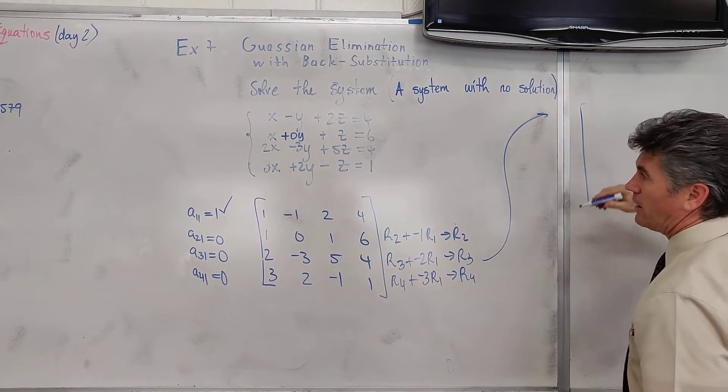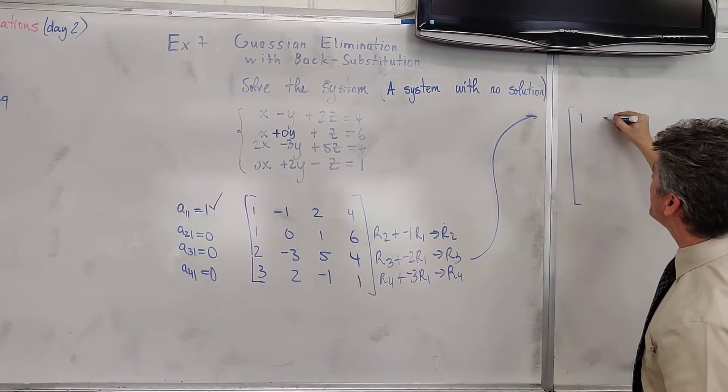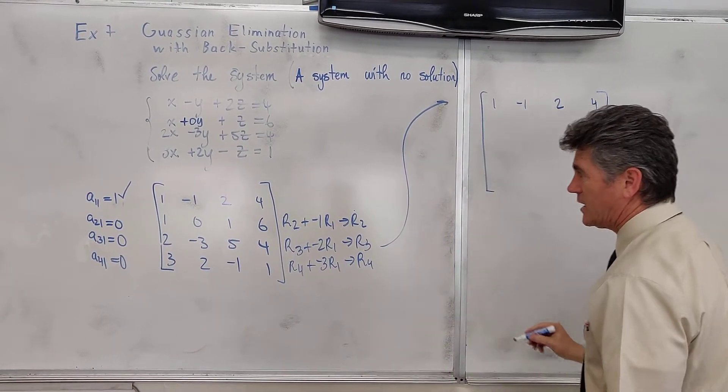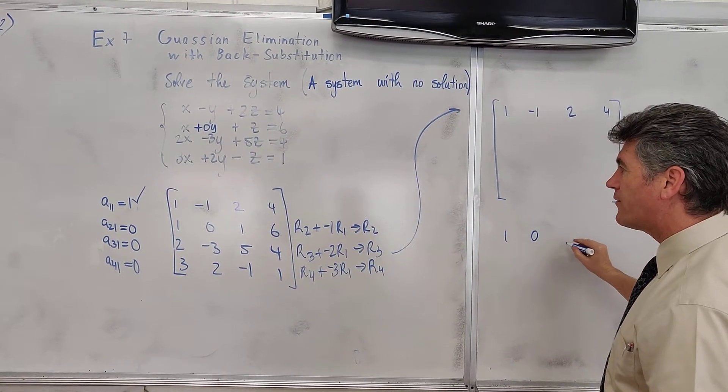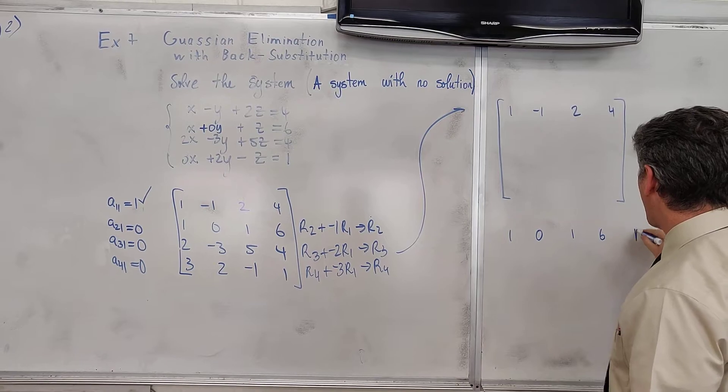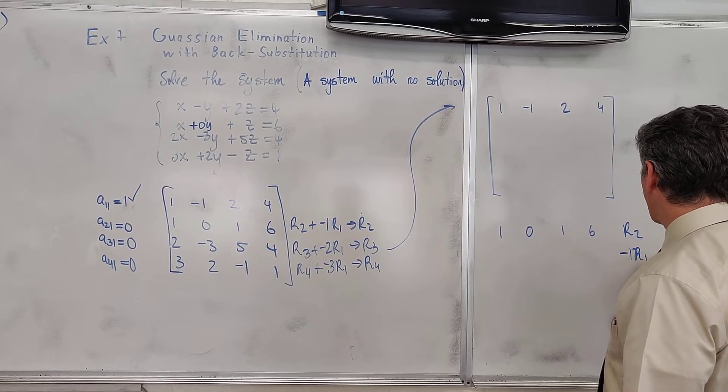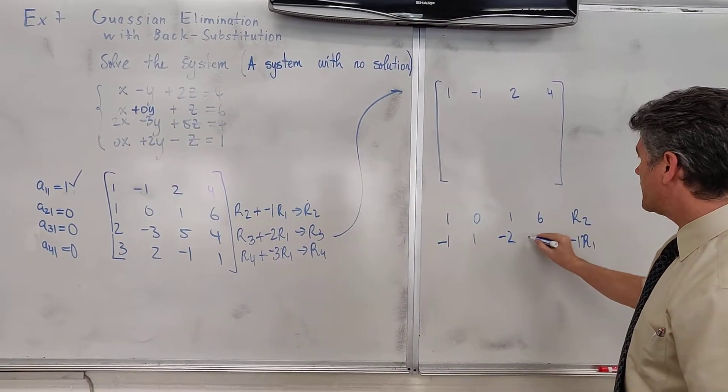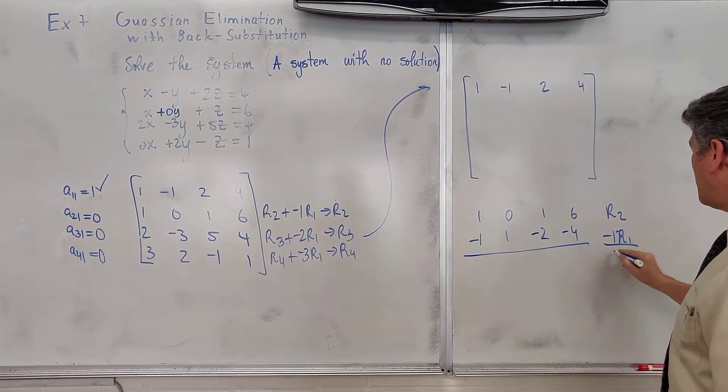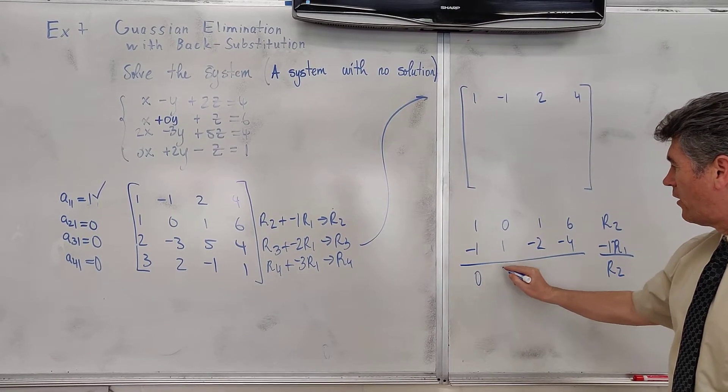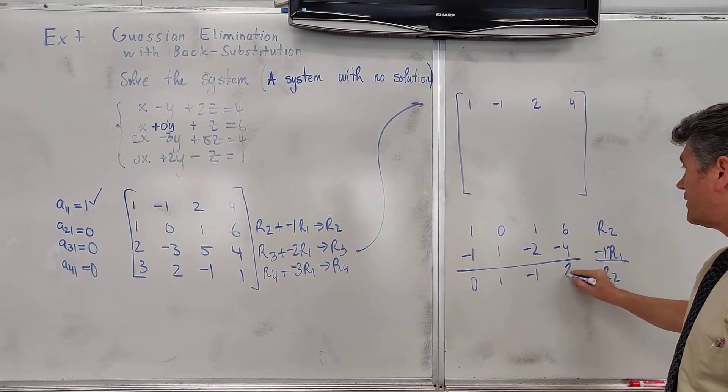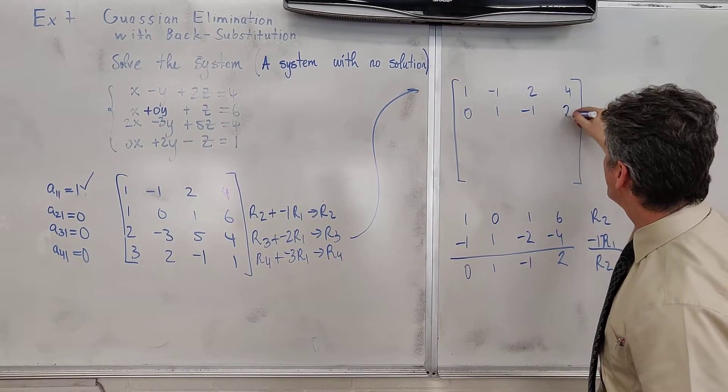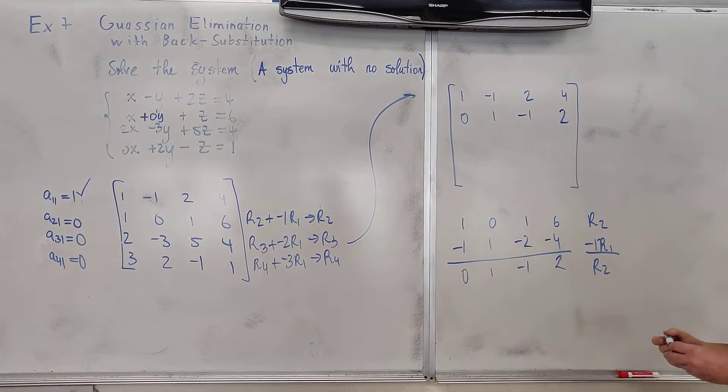So let's write what we write, at least the first row, which will not change. 1, negative 1, 2 and 4. And let's do a little bit of arithmetic. Nothing more complicated. We have 1, 0, 1 and 6. There is our row 2. And now we want negative row 1, which is negative 1, positive 1, negative 2 and negative 4. We get 0, 1, negative 1 and 2. There is our new row 2.